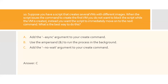Question ten: Suppose you have a script that creates several virtual machines with different images. When the script issues the command to create the first virtual machine, you do not want to block the script while the VM is created — instead you want the script to immediately move on to the next command. What is the best way to do this? A) Add the --async argument to your create command, B) Use the ampersand to run the process in the background, C) Add the --no-wait argument to your create command. Adding --no-wait will cause the Azure virtual machine create command to return immediately without waiting for the virtual machine to be created. Option C is the right answer.